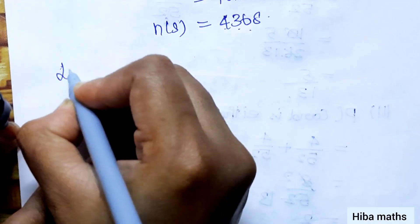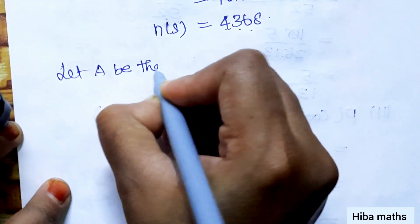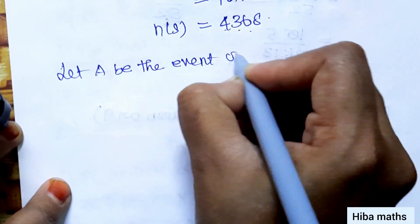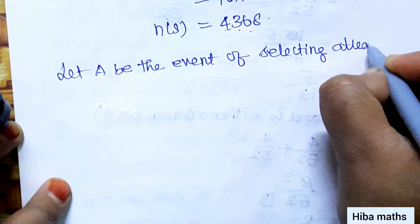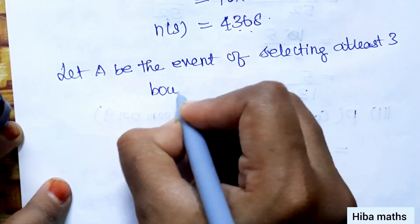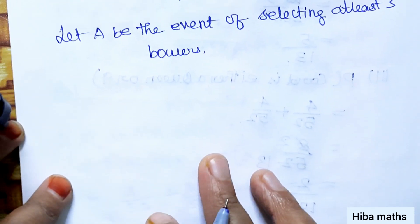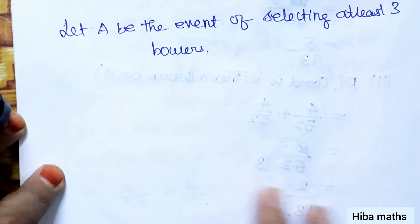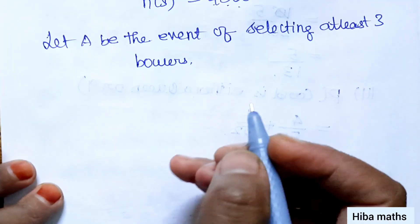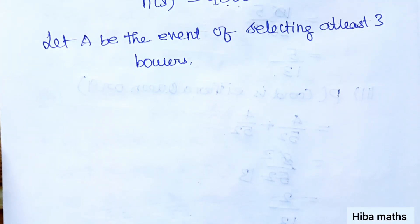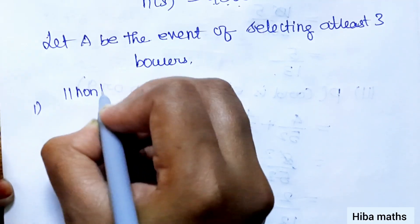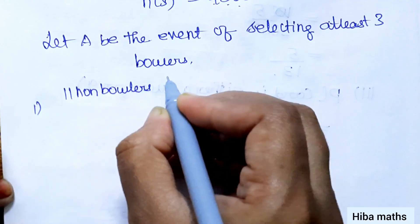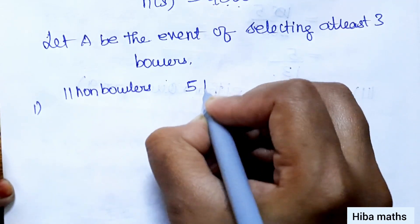Let A be the event of selecting at least three bowlers. The total team size is 11, and we need at least 3 bowlers from the 5 available. So the possible numbers of bowlers are 3, 4, or 5.